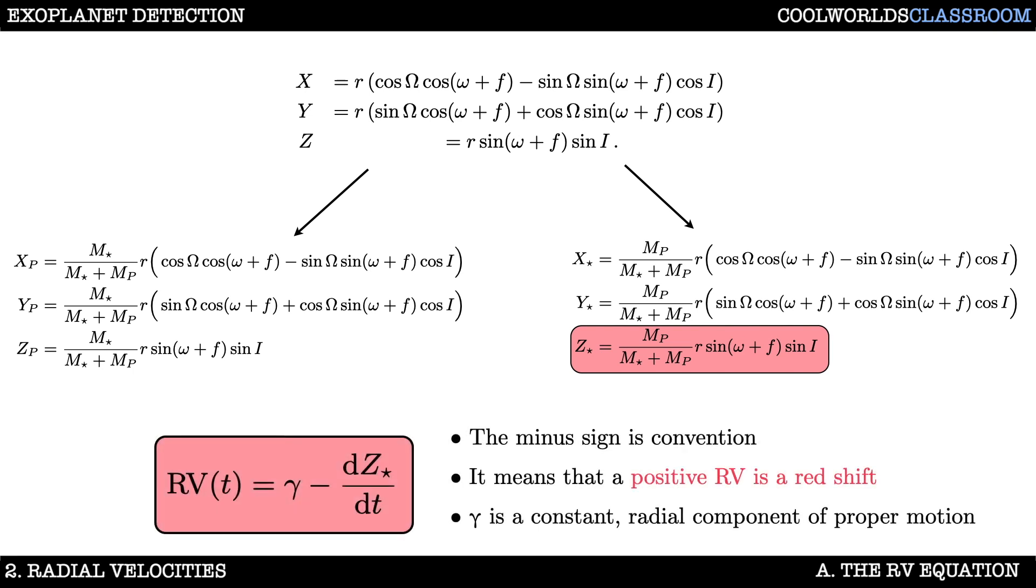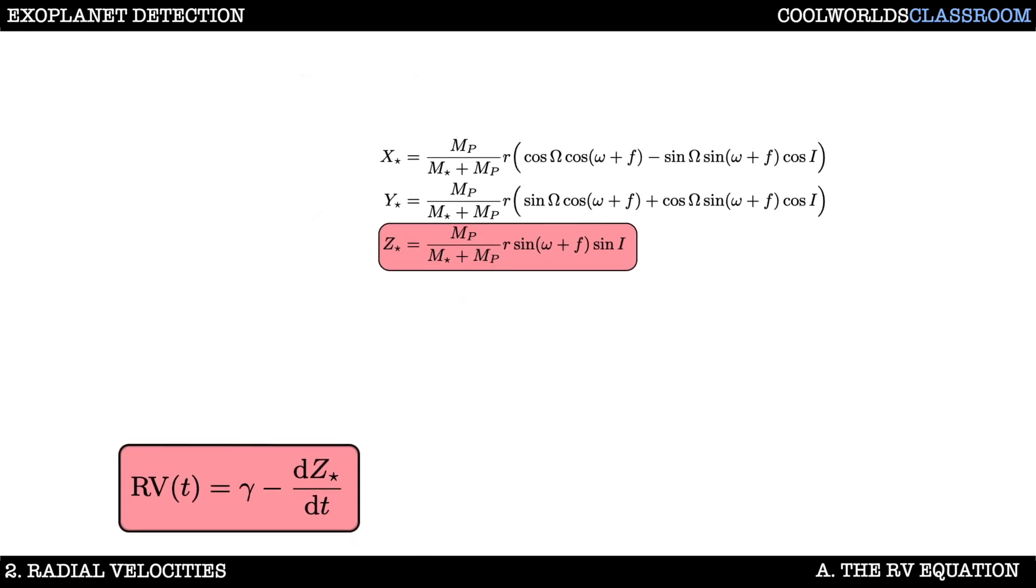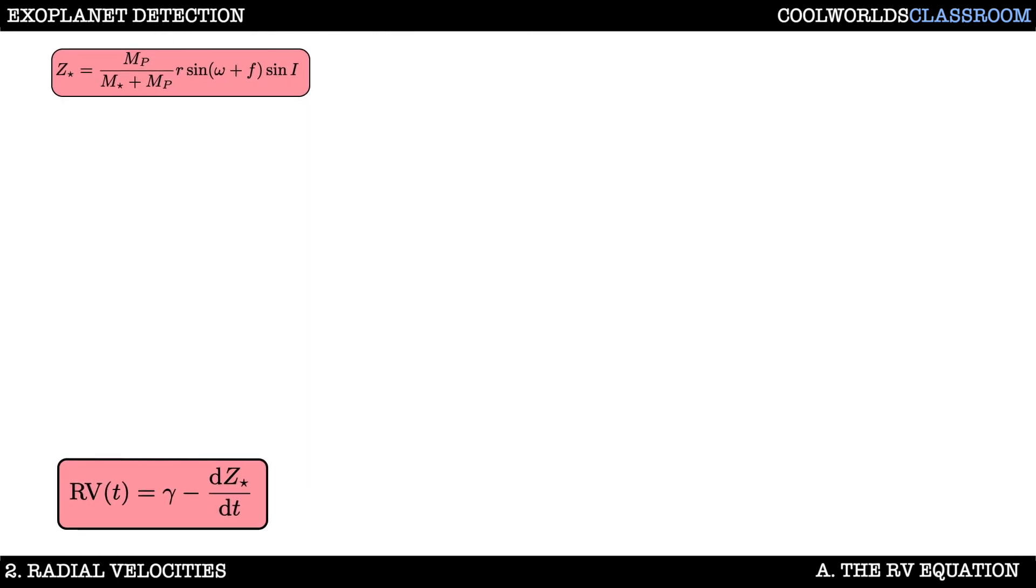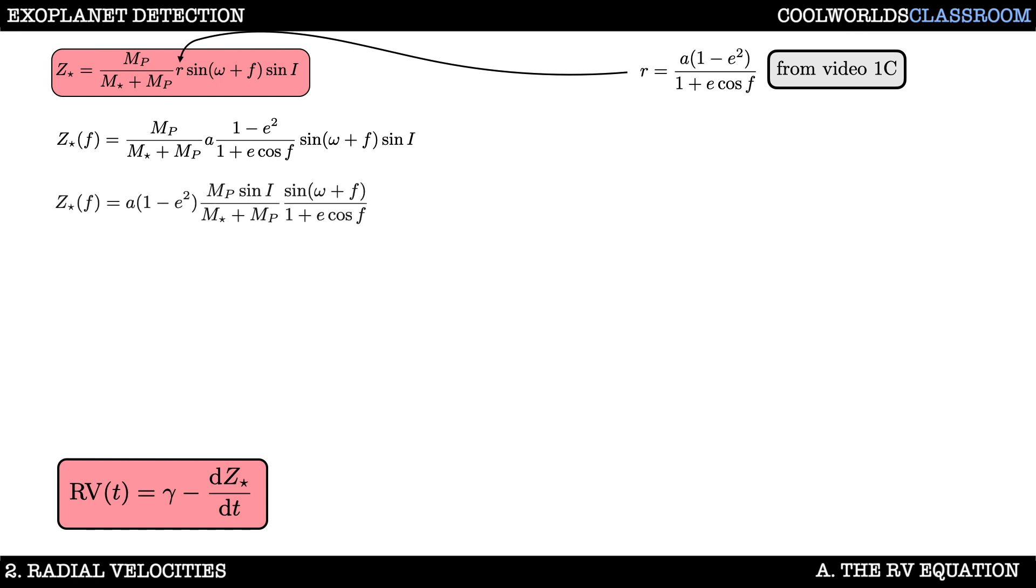Specifically radial velocity is conventionally defined as minus dz/dt plus a constant gamma which is just the speed at which the star is essentially drifting through the galaxy. The choice of that minus sign is just by convention, it's totally arbitrary, but it means that things moving away from us which are red shifted have a positive radial velocity. Let's save these two equations and move them over to a new slide. That r term in the z star equation represents the planet star separation and is something that we determined back in video 1c, so let's just plug that in. That yields the following which can be tidied up a little through rearrangement to this.